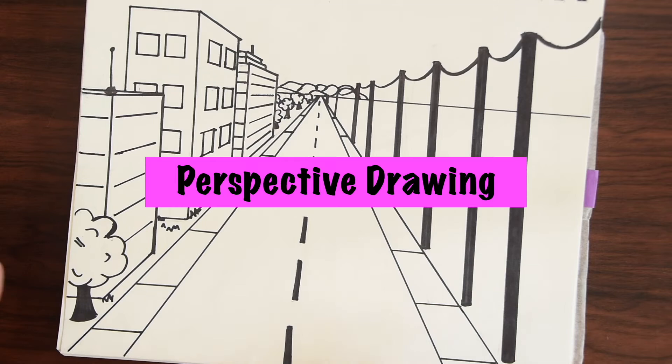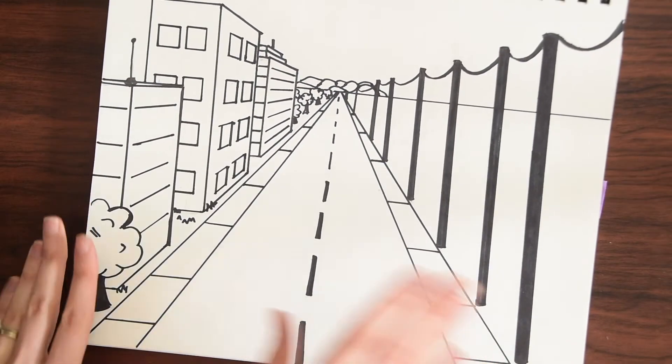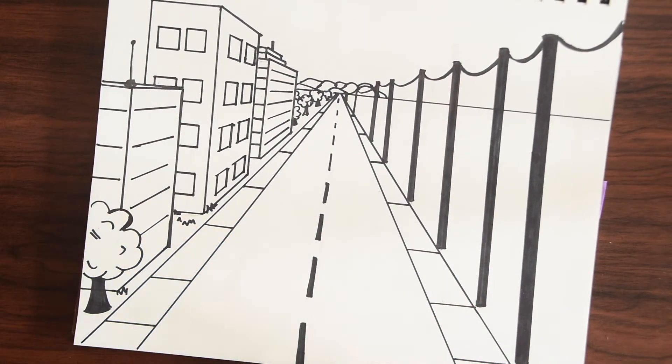This is based on a method called perspective drawing. So before we get into how to actually draw this, let's just look at perspective drawing and what it actually means. You're a person, you have a perspective on things. Things seem closer to you, some things seem further away.